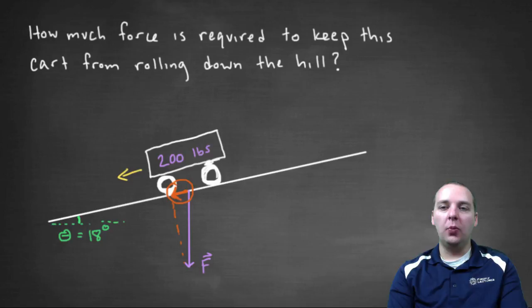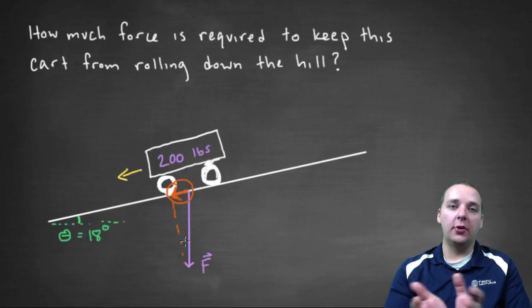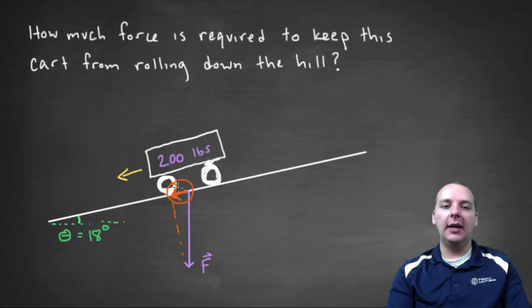That force, and you can see it on my diagram here in orange, is the projection of that force vector F onto the hill, or a vector on this hill with this angle of inclination of 18 degrees.